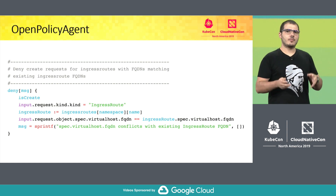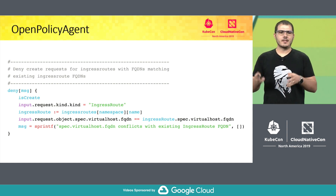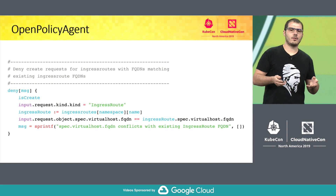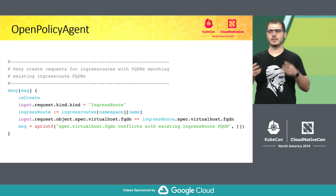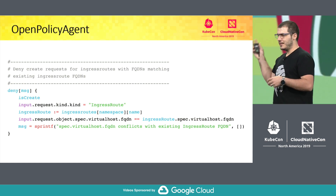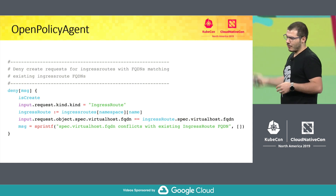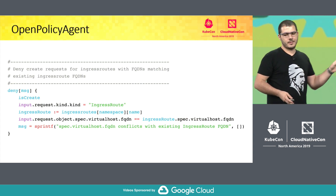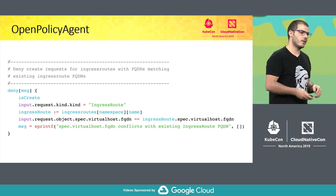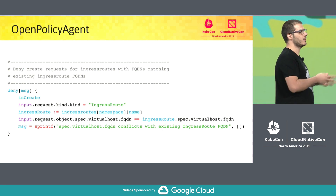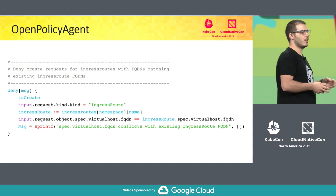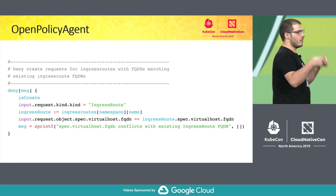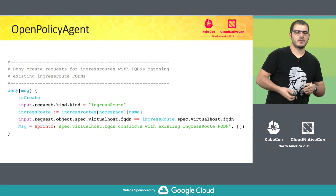In a standard Kubernetes cluster, we can validate or mutate API requests using admission controllers. But if you need something custom, the easiest way is through Open Policy Agent. This is a simple policy written in Rego that prevents independent users from creating IngressRoute CRDs in the same cluster using the same FQDN.